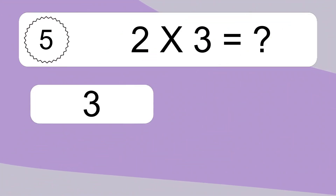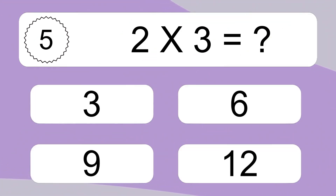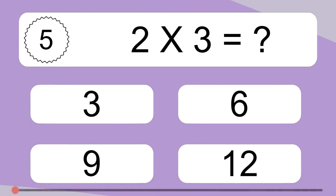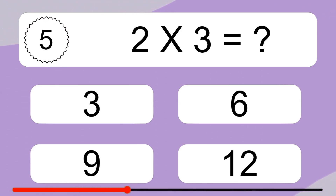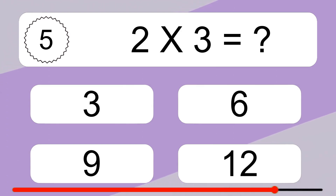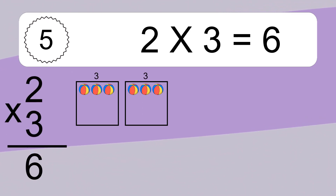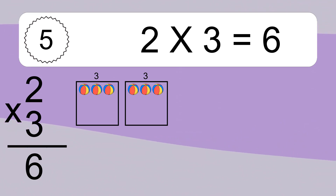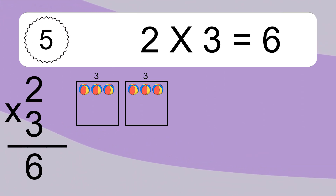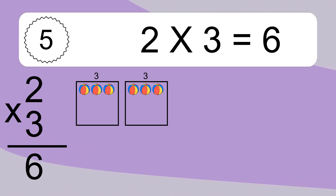2 times 3 equals what? 2 times 3 equals 6. We have 2 boxes, and each box has 3 colorful balls inside. If you count all the balls in all the boxes together, you will have 2 times 3 balls. This equals 6 balls.